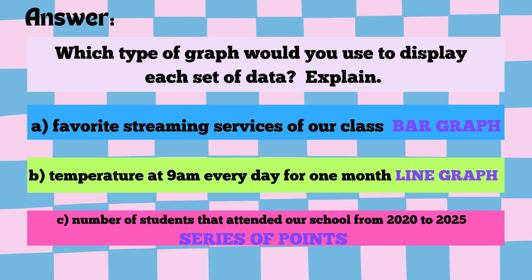For the second data set — temperature at 9 a.m. every day for one month — we would choose a line graph. Line graphs are perfect for showing trends over time. Temperature is continuous data that changes from day to day, and the line helps visualize patterns and fluctuations. You can easily spot warming or cooling trends.